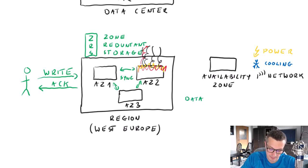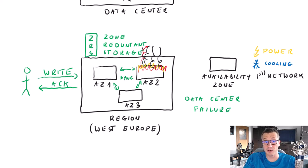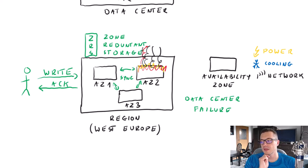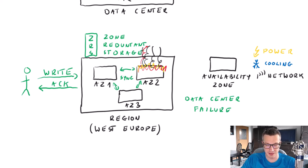ZRS is more expensive than LRS — which protected us from server issues inside a single data center. But what if we had a wide regional disaster — maybe an earthquake, tsunami, or something that destroys all data centers within a single region? In that case with ZRS, we would lose all our data. That's why we have yet another option.